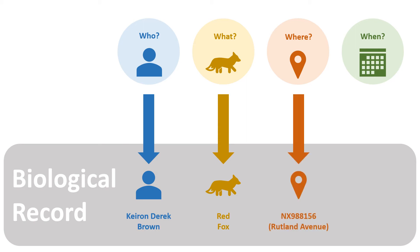The where refers to the geographic location of the record. Grid references are preferable over place names as they refer to a standard unit of area. The when refers to the date or time of year of the record.